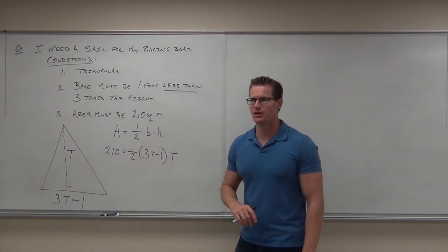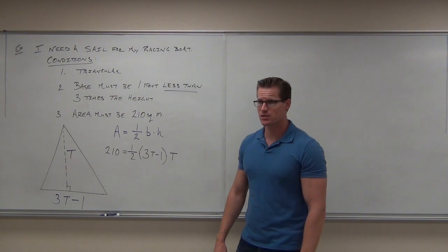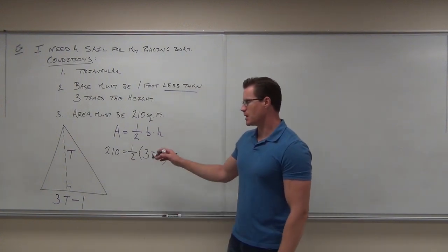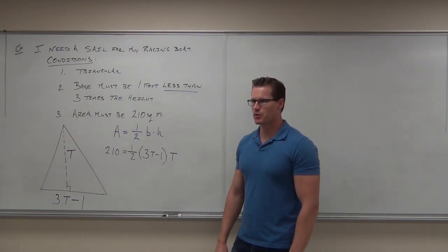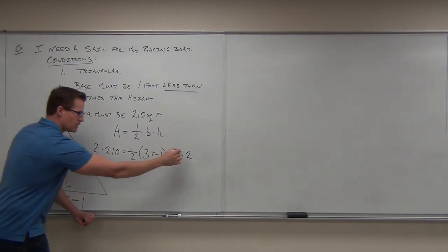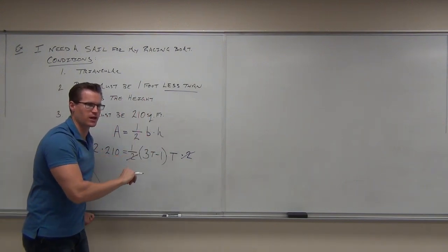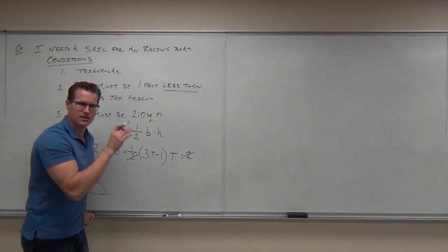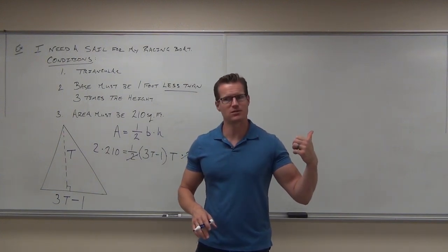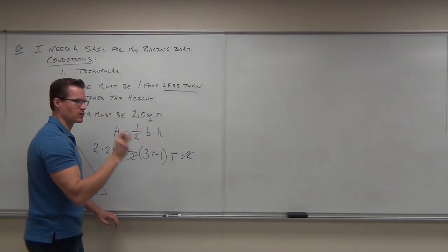There's a fraction, but getting rid of fractions in equations is easy. The denominator is 2, so multiply both sides by 2. The one-half times two cancels, and the left side becomes 420. Distribute the right side to get 3T squared minus T. Don't distribute a fraction in an equation — just get rid of it by multiplying both sides by the denominator.